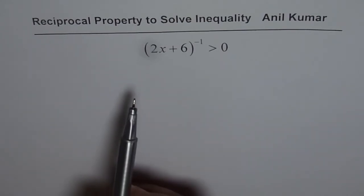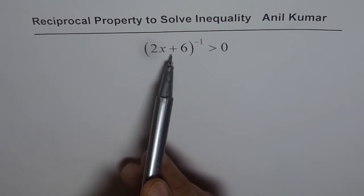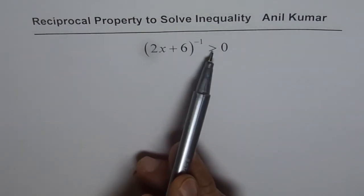Let me first discuss with you what this property is and then we will solve 2x plus 6 to the power of minus 1 greater than 0.